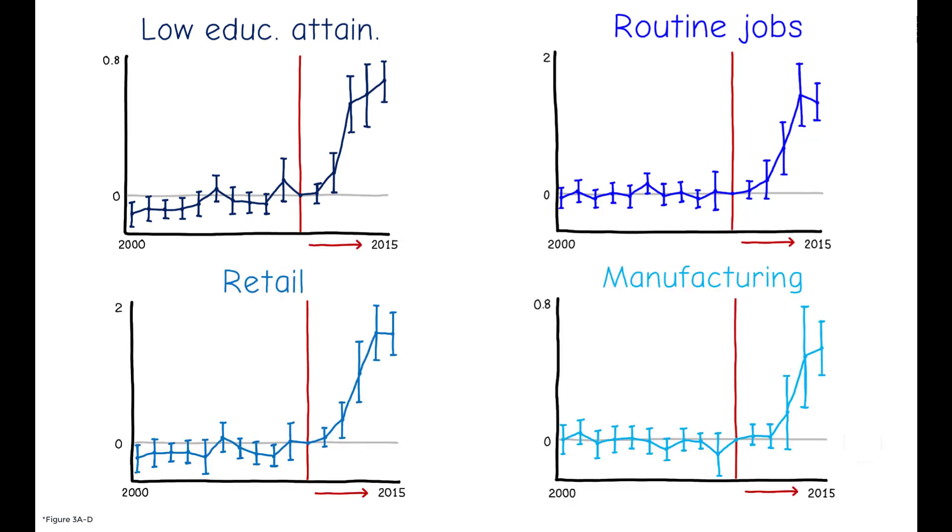All suggest that after 2010, UKIP started to thrive especially in areas characterized by low educational attainment and a significant share of the local population working in routine jobs or in manufacturing or retail.